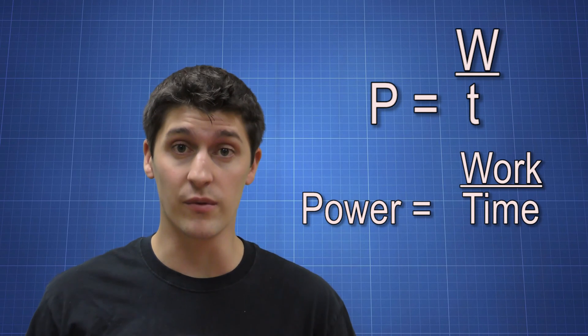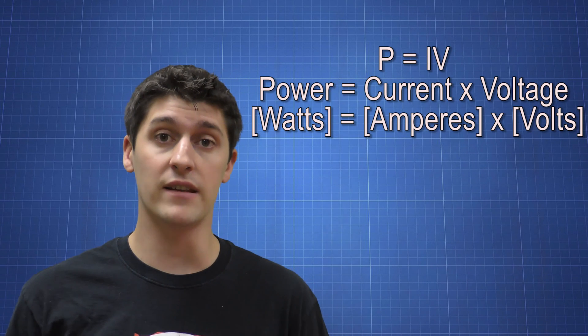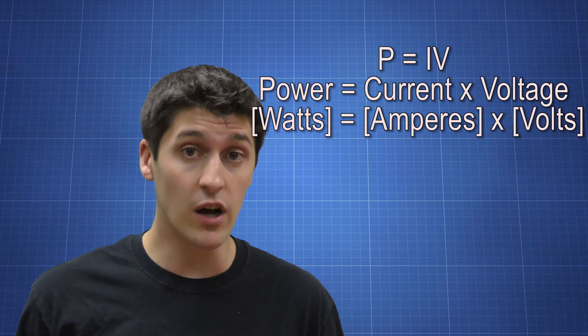We can also define power using another equation. Power is equal to current times voltage, or P equals I times V. This is more helpful for us in the context of talking about circuits.